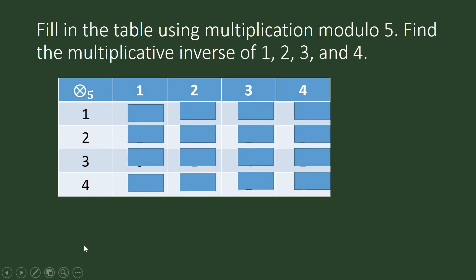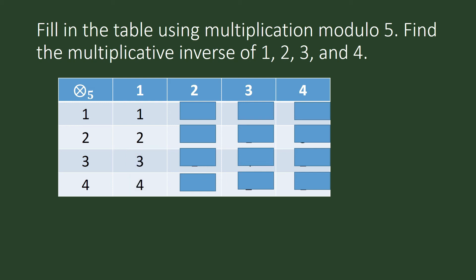Fill in the table using multiplication modulo 5. Find the multiplicative inverse of 1, 2, 3, and 4 under multiplication modulo 5. 1 times 1 is 1, so 1 is the multiplicative inverse of 1 modulo 5. 2 times 3 is 6, and when we divide 6 by 5 the remainder is 1, so 2 times 3 is congruent to 1 modulo 5.